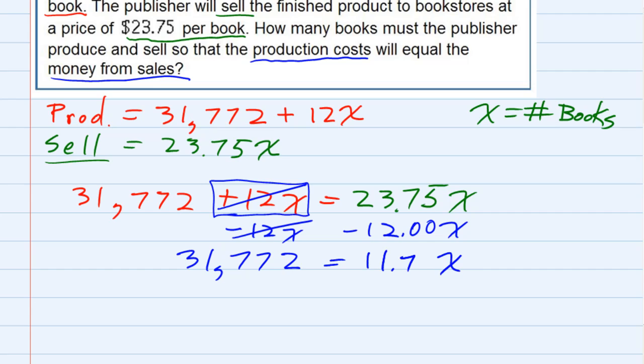That leaves us with just one more step to solve for X, and that is to divide both sides by $11.75. I'm doing this to get the X by itself on the right-hand side, because those will cancel.